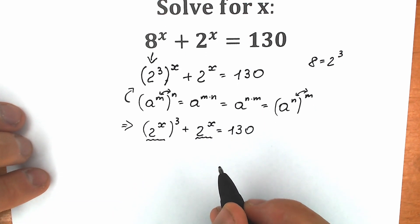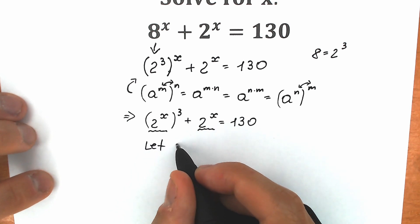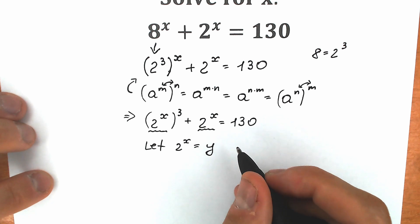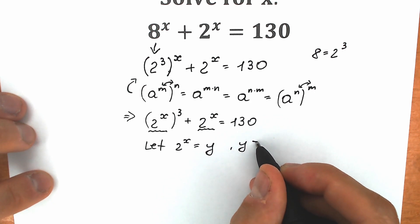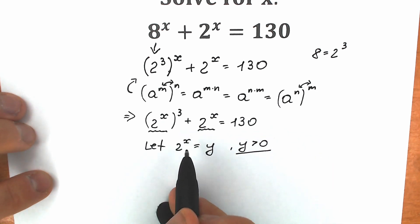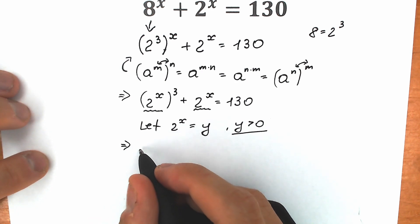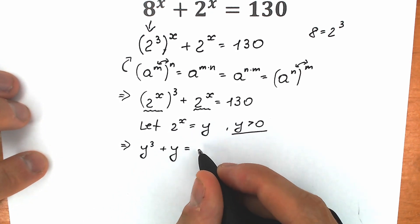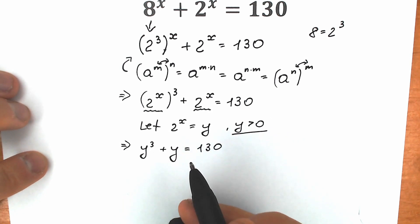So it's a great moment to write our substitution. Let our 2 to the x equal to y. One really important point: y needs to be positive, because we are talking about an exponential function, which is always positive. So y is greater than 0. Right now let's substitute: we have y cubed plus y equal to 130.